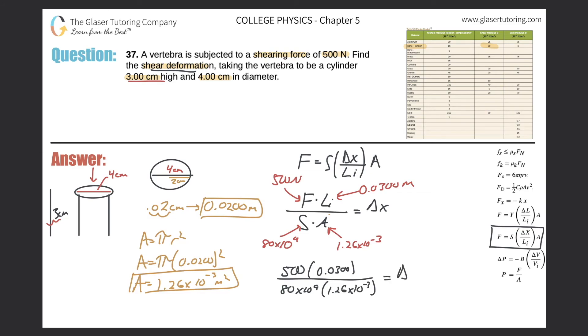So simply do 500 times 0.03 and then take that result and divide it. Be careful with your parentheses. 80 times 10 to the 9 times 1.26 times 10 to the negative 3. And what do we get? We get a value of 1.49 times 10 to the minus 7. And that is the shear deformation. And that is in terms of meters.